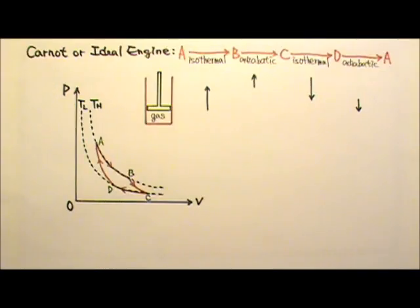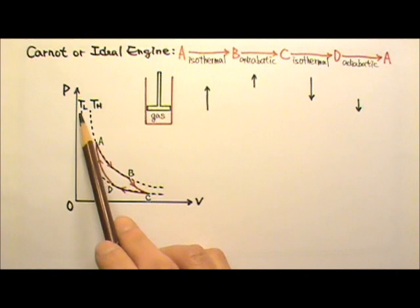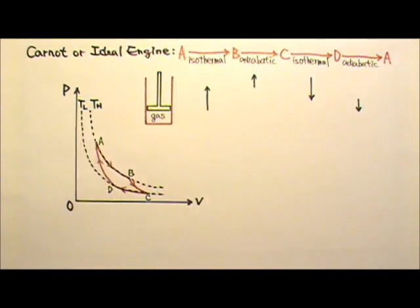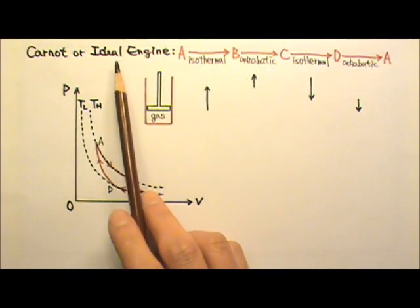Out of all heat engines working between two certain temperatures, there is one kind that is the most efficient. It can be proven that no heat engines can be more efficient than a Carnot or ideal engine.